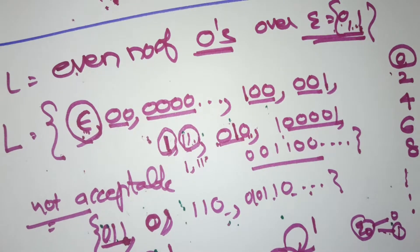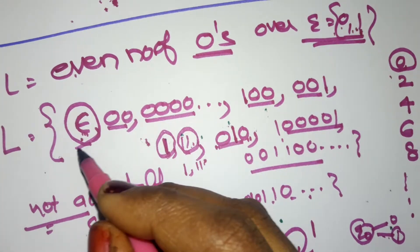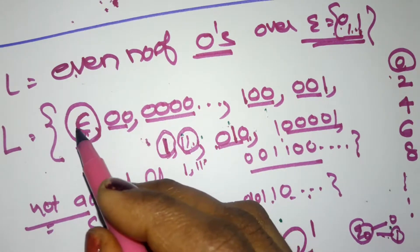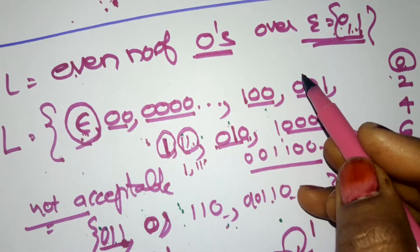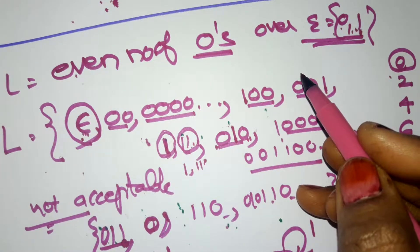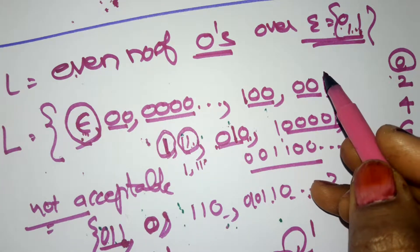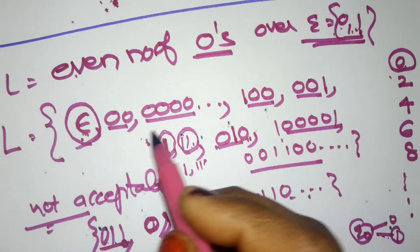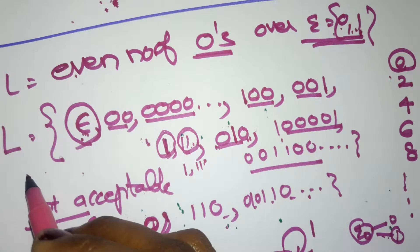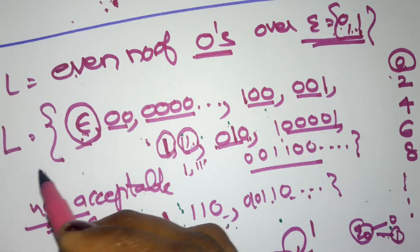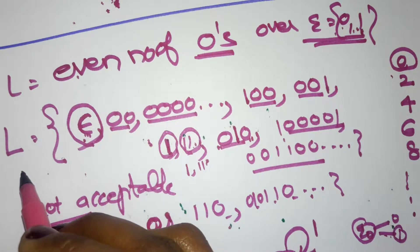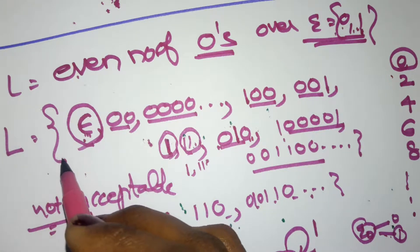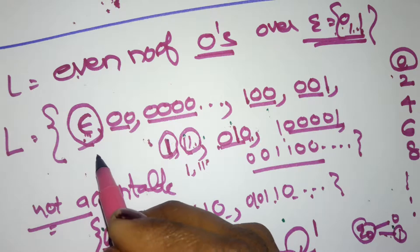Now we will see another example: design a DFA for the language L equal to even number of zeros, over the sigma equal to {0, 1}. First you need to write the set of acceptable strings.